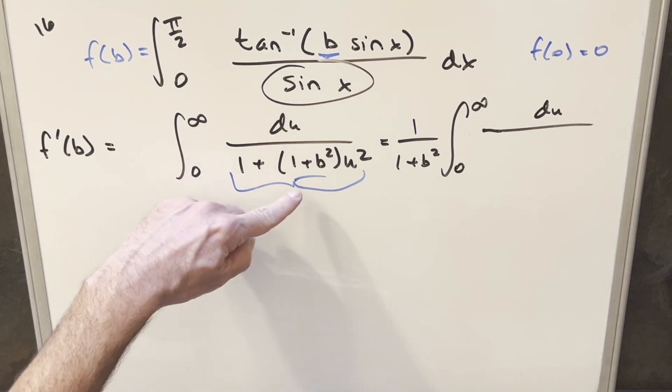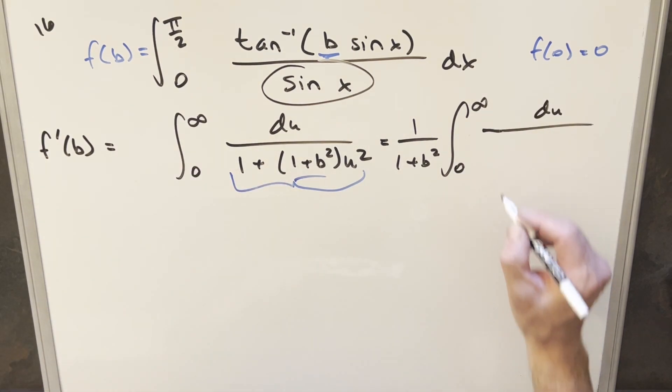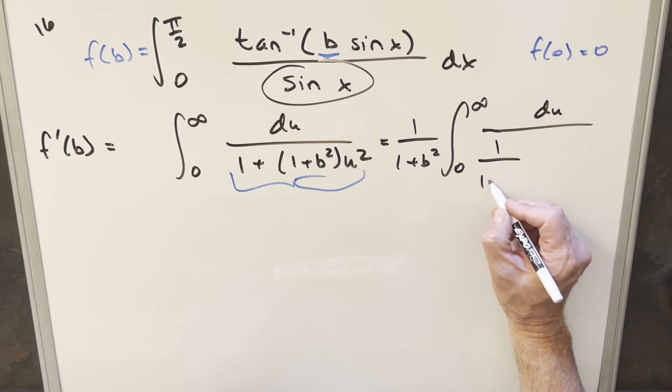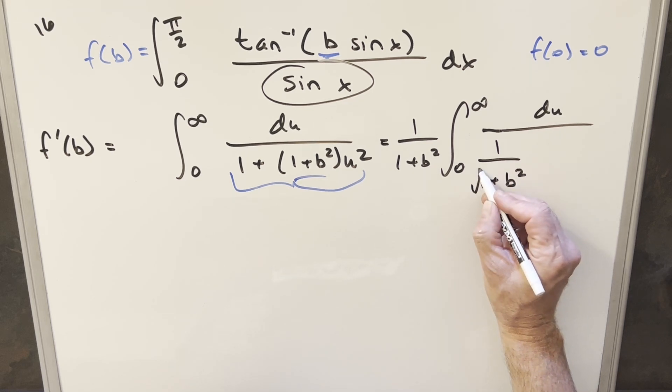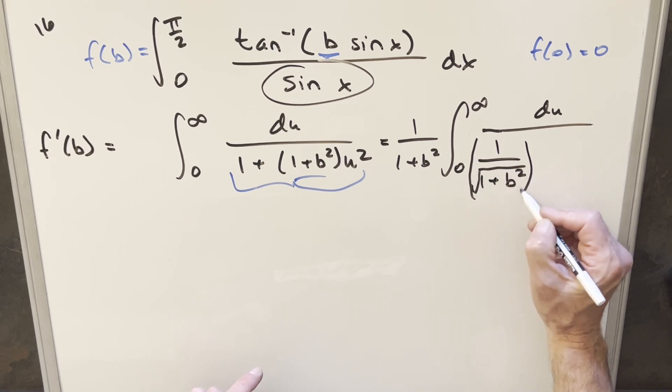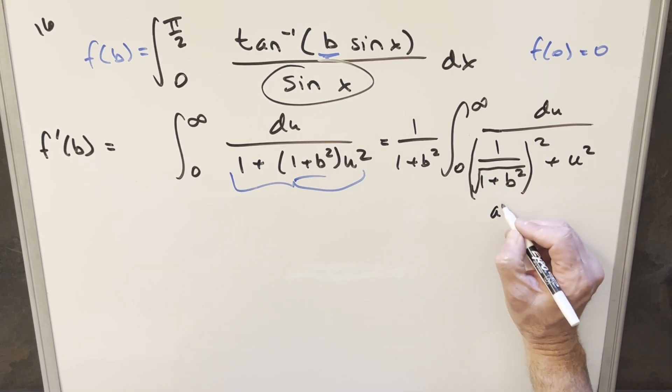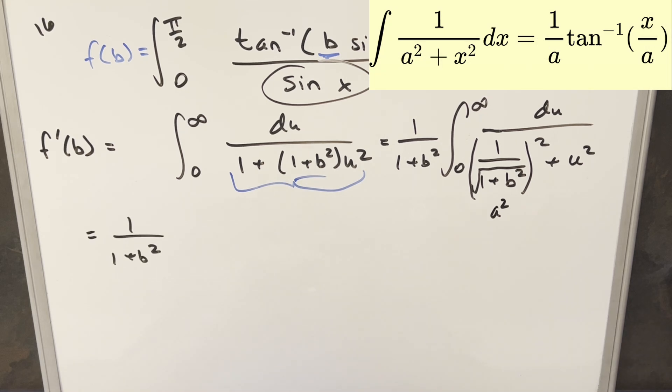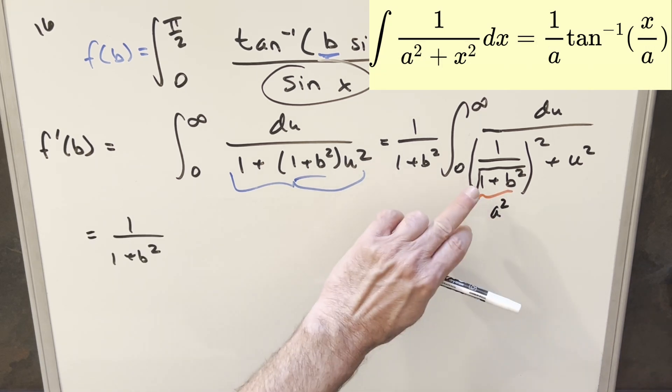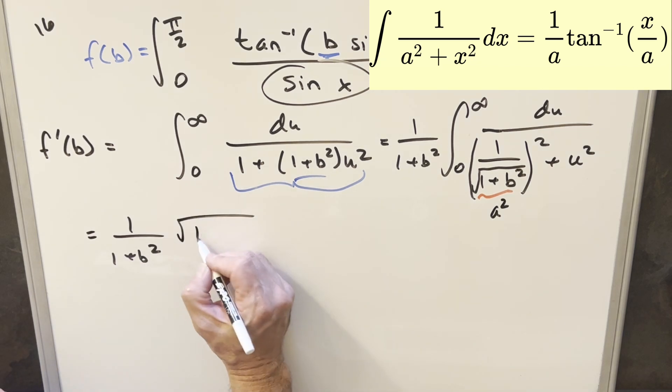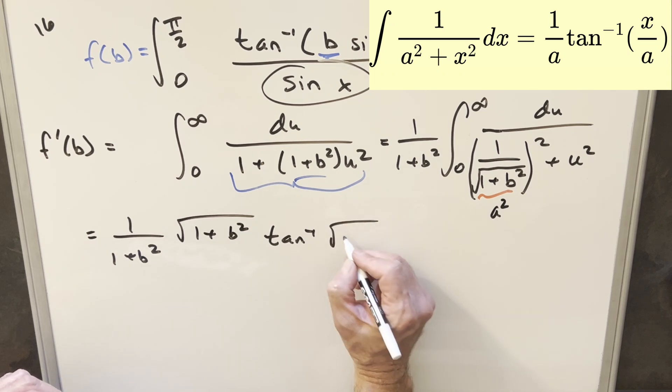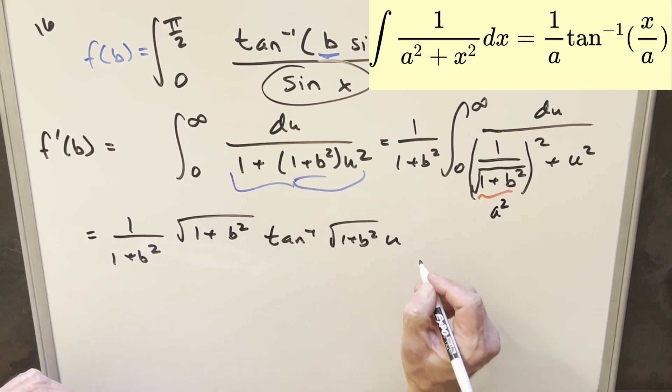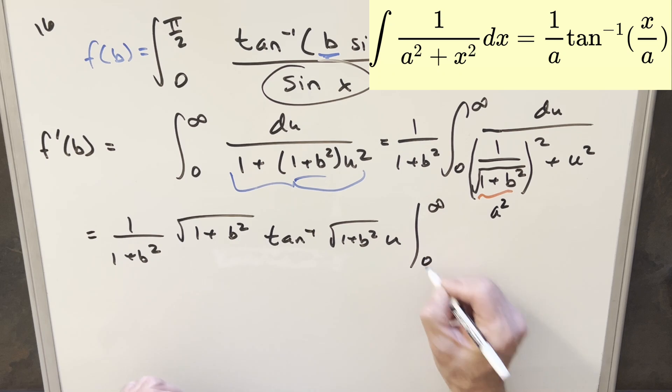Then for this 1, this is going to become 1 over 1 plus b squared. But I want to set it up for our formula, so what I'm going to do is let's write it as 1 over 1 plus b squared, but turn it into a square root, and then square the whole thing. And now we have this like a squared plus u squared. So now just applying the arctan formula on this, where this right here is our a value, we want the reciprocal 1 over a, so it's going to be square root 1 plus b squared, arctan, this value again, 1 plus b squared, times u, evaluated from 0 to infinity.